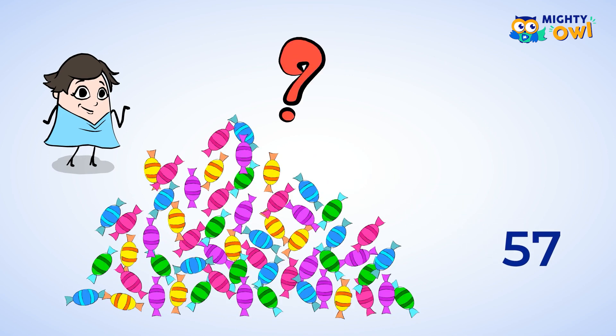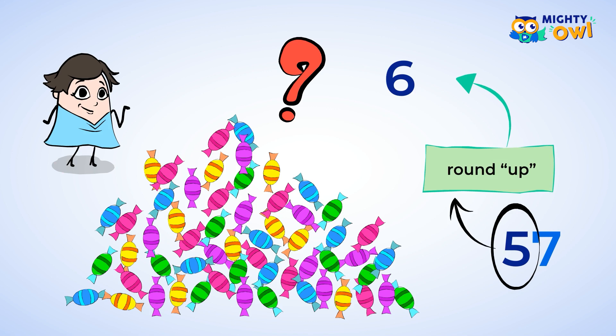Around how many do you have? Well, the number 57 has a seven in the ones place. This means that you should round up. There's a five in the tens place. Well, we increase that by one, and the five changes into a six. 57 would then round up to 60, and you could say that you have about 60 pieces of candy. That's a much better number.